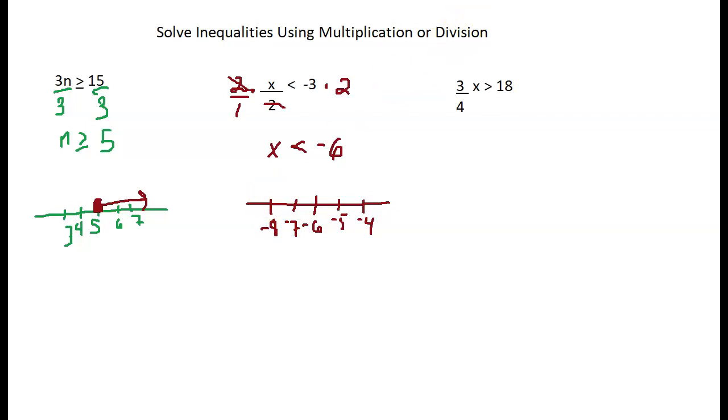I'm going to circle my critical number. I do not shade it in because the inequality symbol is not underlined, so it does not include the negative 6. x is less than negative 6, so numbers less than negative 6 go to the left.